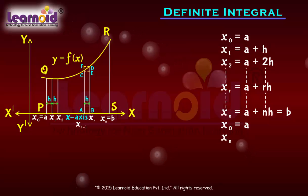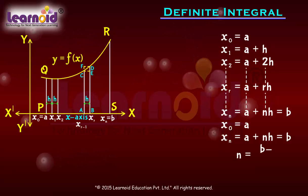From xₙ = a + nh = b, we can find n = (b - a)/h. In this relation, when n tends to infinity, h tends to zero. The region PQRSP is the sum of n subregions.